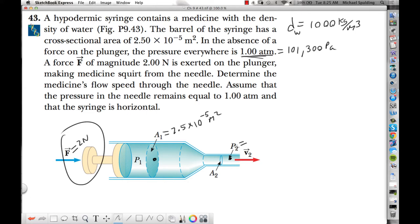How do we know that? Because the skinny part, region 2, is open to the atmosphere. So let's just put this down. P2 equals 1 atmosphere, which is 101,300 pascals.